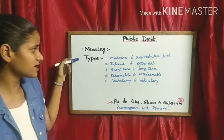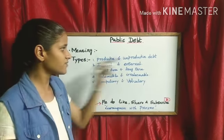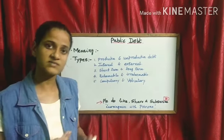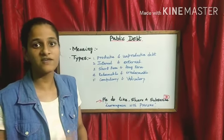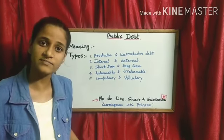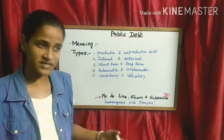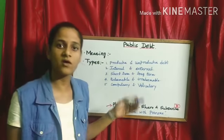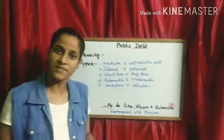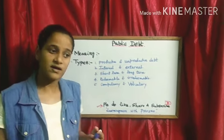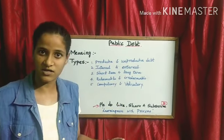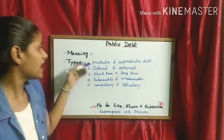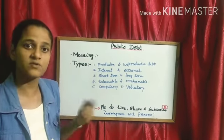When we come to types of public debt, it means productive and unproductive debt. When we come to productive debt, the government is going to borrow money only for productive purposes. Examples include construction of dams, construction of buildings, properties, etc. When we come to unproductive debt, the government is going to borrow money for unproductive activities. Example, when natural calamity occurs, or example, the COVID-19 pandemic like that.